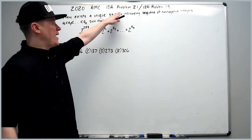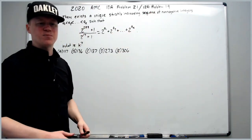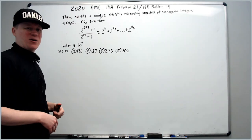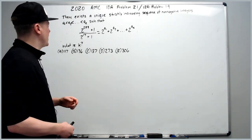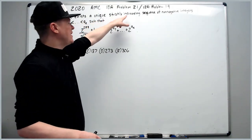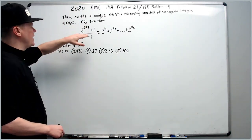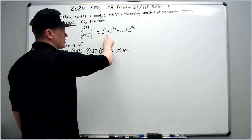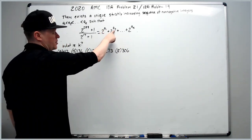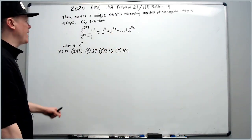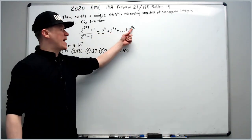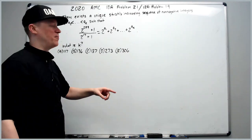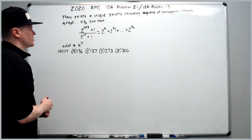For the 2020 AMC 10A problem 21, which was also the 12A problem 19: this problem has several solutions. This is not the fastest way to do it, but it's the way I did it when I solved it. There exists a unique strictly increasing sequence of non-negative integers a₁ through aₖ. What is k? Note: we're finding how many powers of 2 are written in the sum, not the exponent of the highest power.